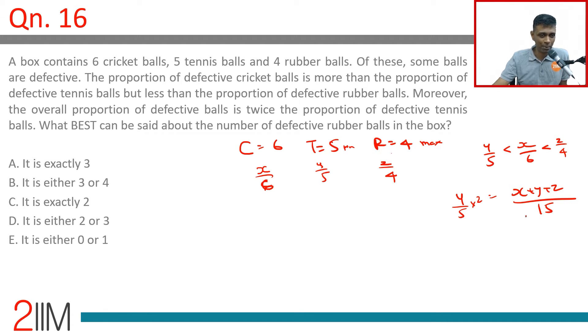The question asks: what best can be said about the number of defective rubber balls in the box? We start with the inequality y/5 < x/6 < z/4.